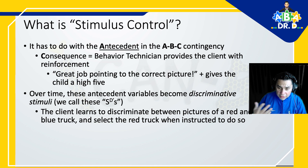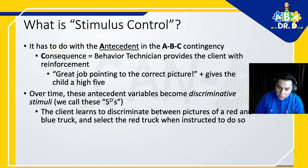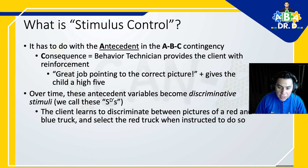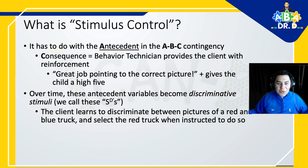This once again has to do with the antecedent in the ABC contingency. The consequence: the behavior technician provides the client with reinforcement, such as 'great job pointing to the correct picture,' plus gives the child a high five. Those reinforcers increase behavior. Reinforcers will be different for each client you work with. Over time, these antecedent variables become discriminative stimuli — we call these SDs, our famous SDs you hear all the time in the field. The client learns to discriminate between pictures of a red and blue truck and selects the red truck when instructed, because of the reinforcement.